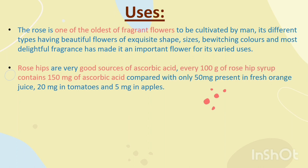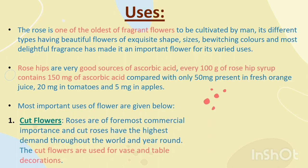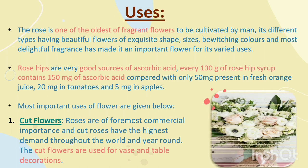The rose is one of the oldest fragrant flowers to be cultivated by man. Its different types having beautiful flowers of exquisite shapes, sizes, varying colors and most delightful fragrance has made it an important flower for its varied uses. Rose hips are a very good source of ascorbic acid. Every 100 gm of rose hip syrup contains 150 mg of ascorbic acid compared with only 50 mg in fresh orange juice, 20 mg in tomatoes and 5 mg in apples. First use: cut flowers. Roses are of foremost commercial importance and cut roses have the highest demand throughout the world year round. The cut flowers are used for vase and table decorations.